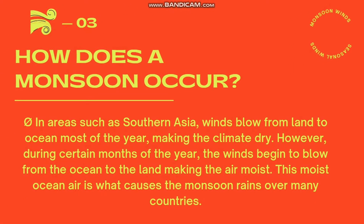Now let's talk about how a monsoon occurs. In areas such as Southern Asia, winds blow from land to ocean most of the year, making the climate dry. However, during certain months of the year, the winds begin to blow from the ocean to the land, making the air moist. This moist ocean air is what causes the monsoon rains over many countries.